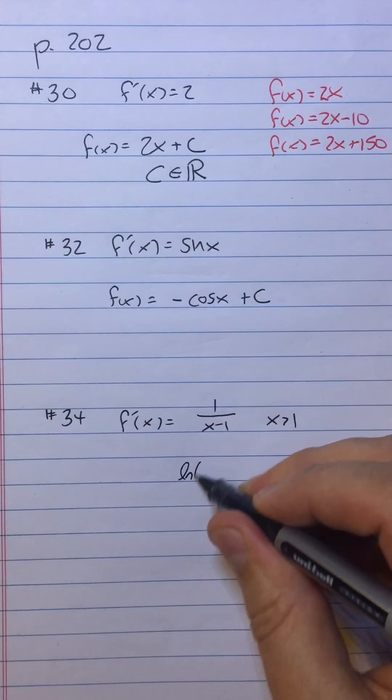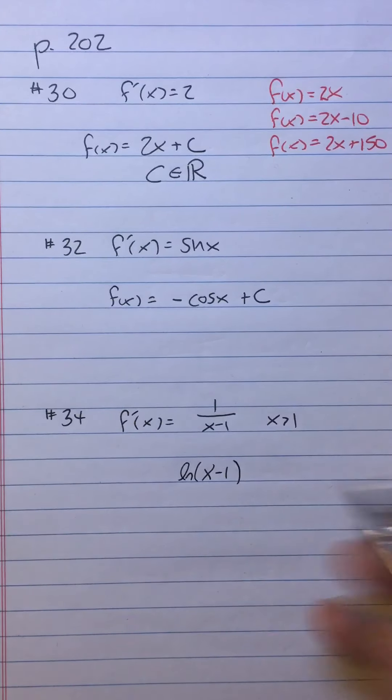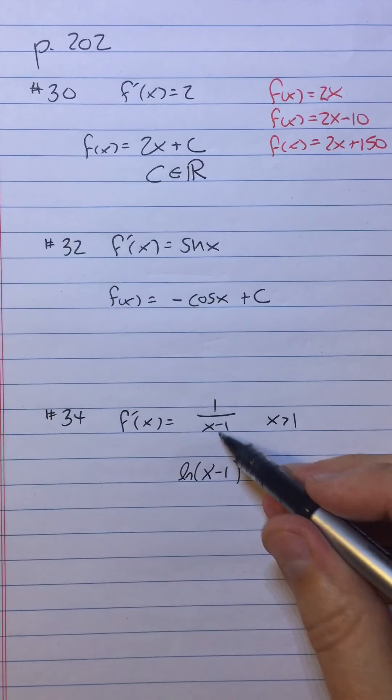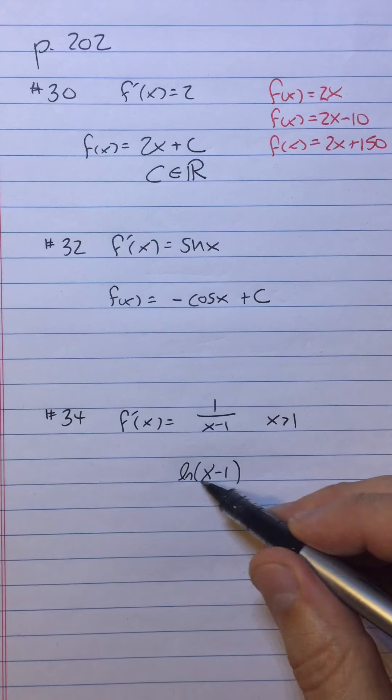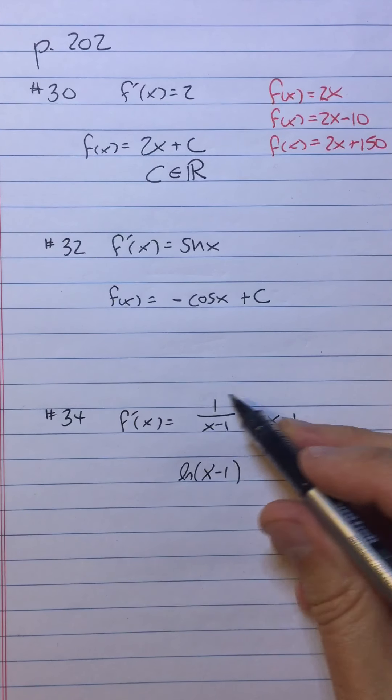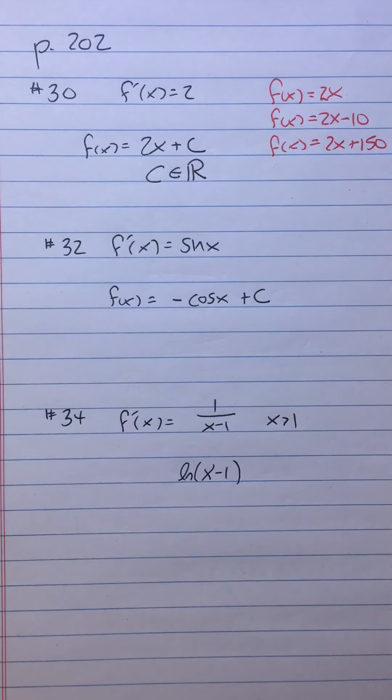Yeah, ln of x minus 1. Because the derivative of ln of x minus 1 would be 1 over x minus 1. There's a chain rule times the derivative of the inside, but the derivative of the inside function is 1, so it does not change the value of 1 over x minus 1.